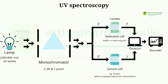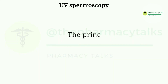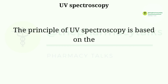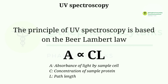We can analyze the sample by comparing the results with the standard result. UV spectroscopy is based on the Beer-Lambert law, which states that the absorbance is directly proportional to the protein concentration and path length. Protein concentration means the concentration of sample present in the sample cell, and path length means the length that the light will have to travel in the sample cell.